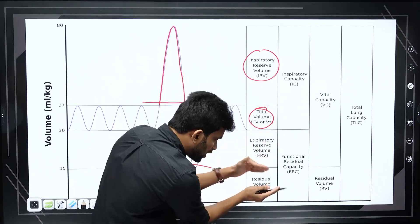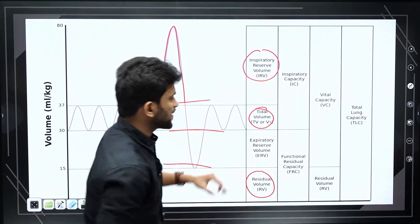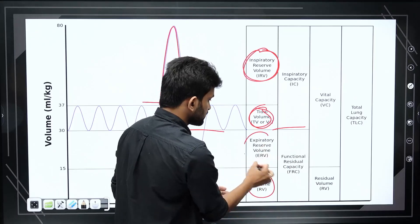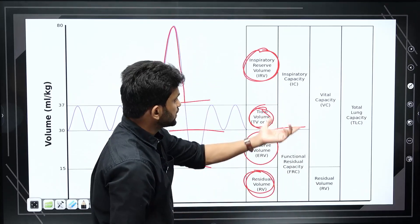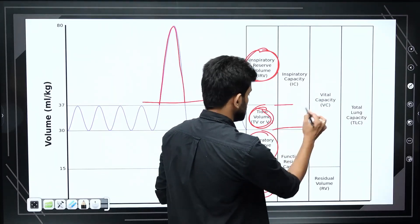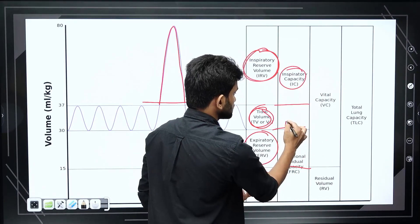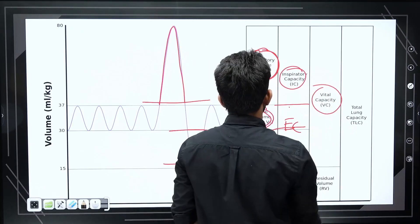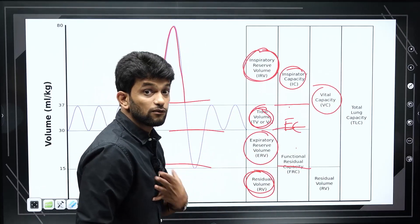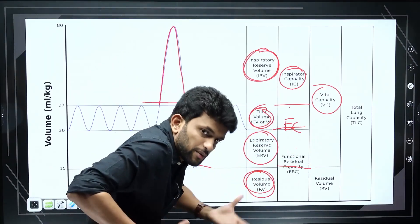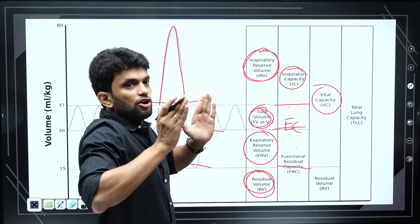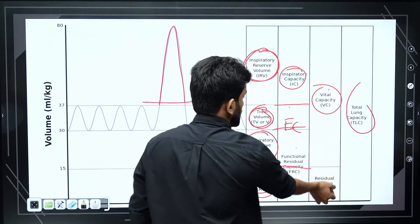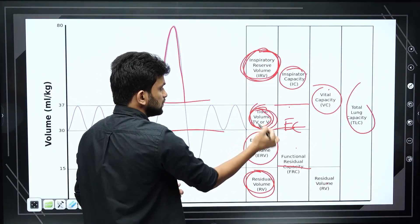Inspiratory capacity equals tidal volume plus IRV. Functional residual capacity equals ERV plus RV. Expiratory capacity equals tidal volume plus expiratory reserve volume. Vital capacity equals ERV plus tidal volume plus IRV. Total lung capacity equals vital capacity plus residual volume, or IRV plus TV plus ERV plus RV.